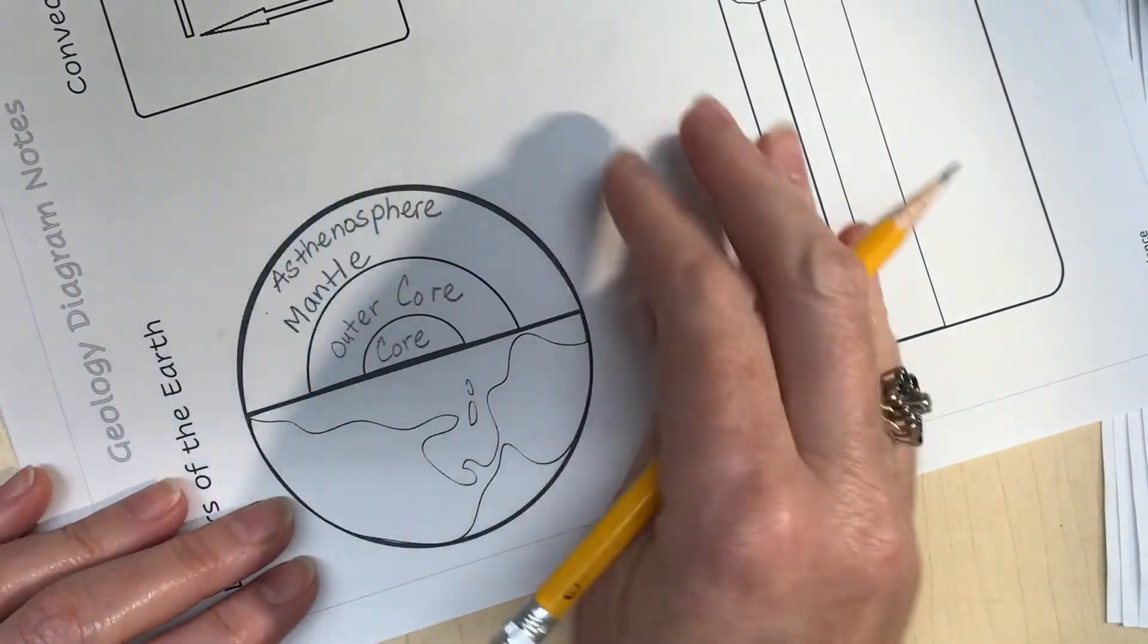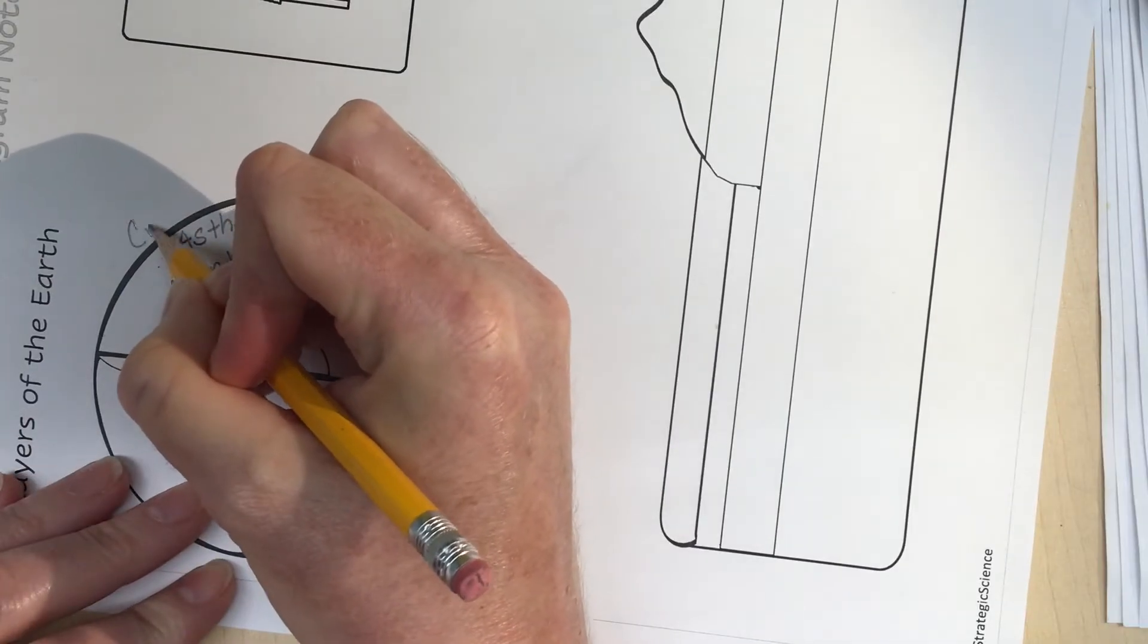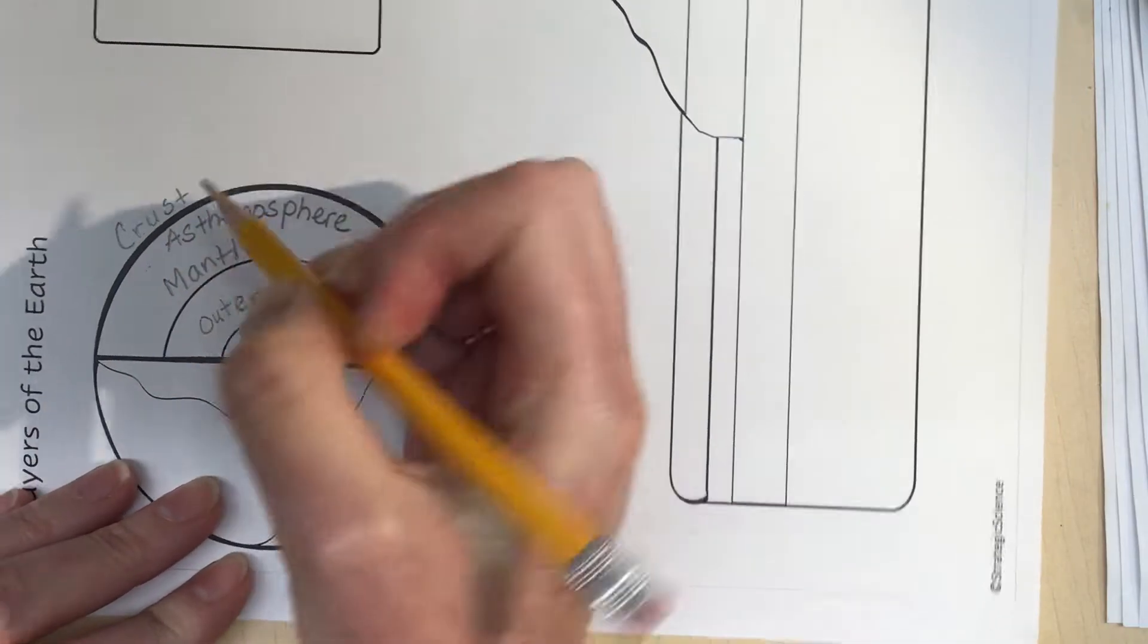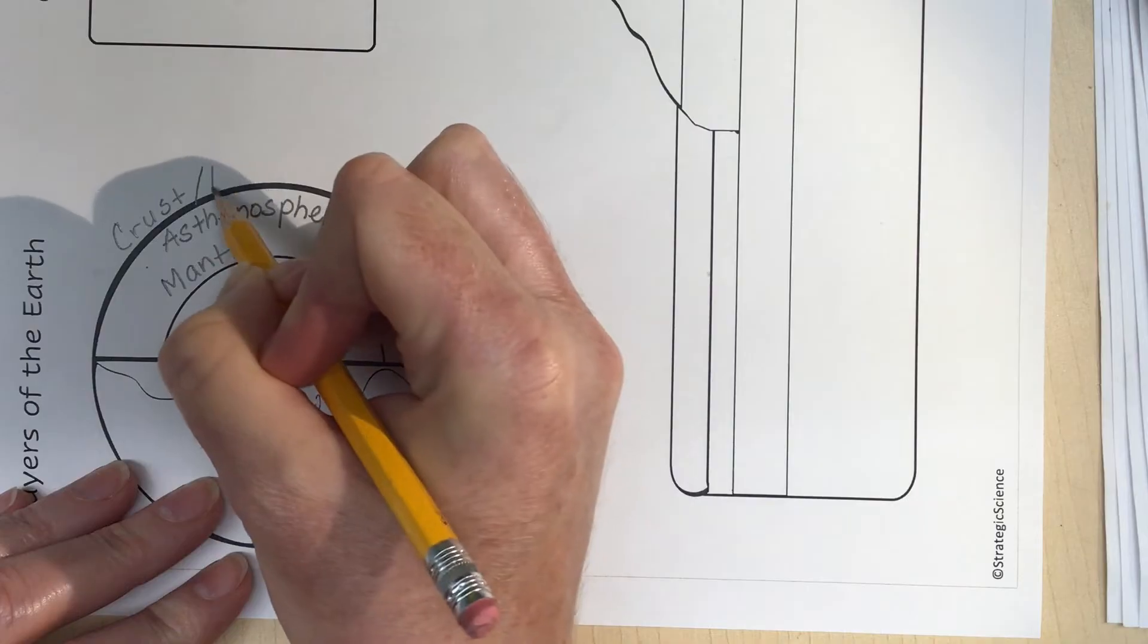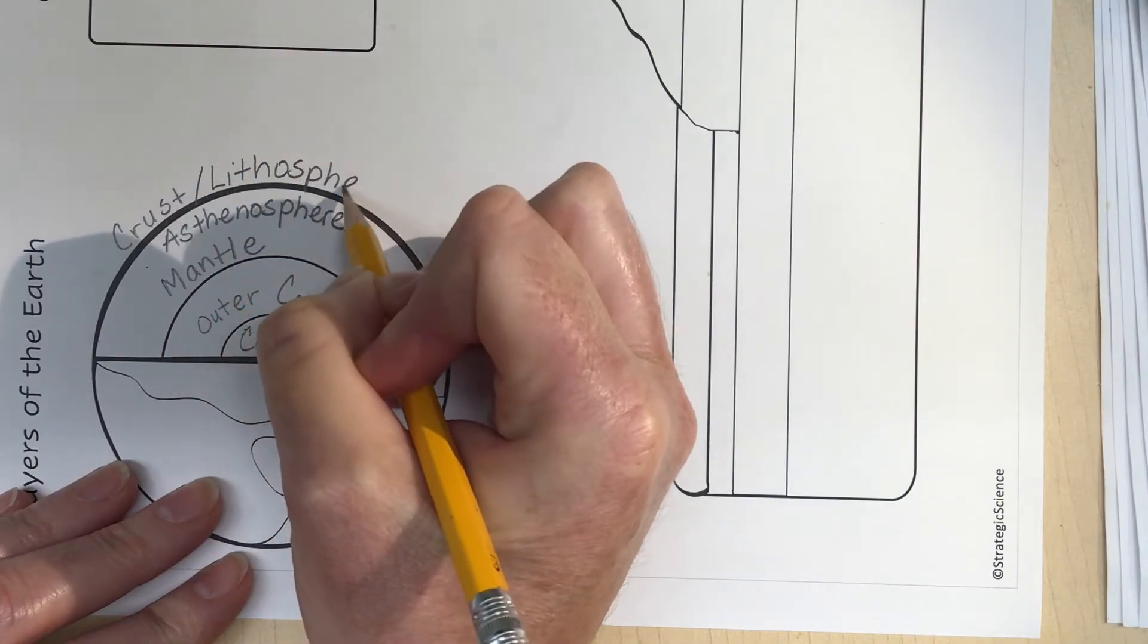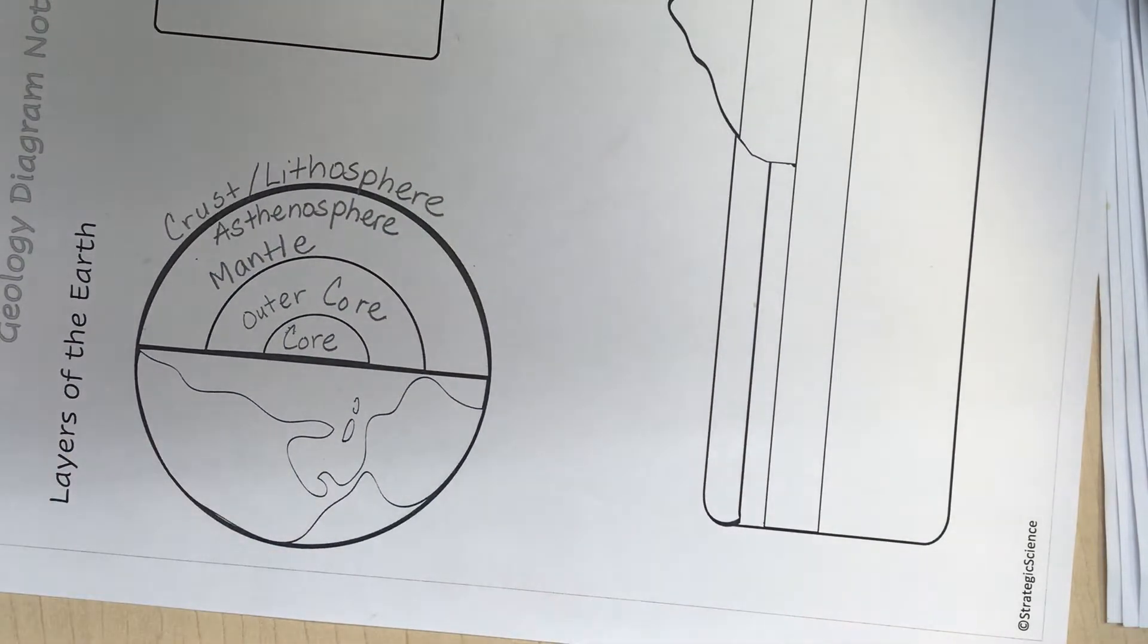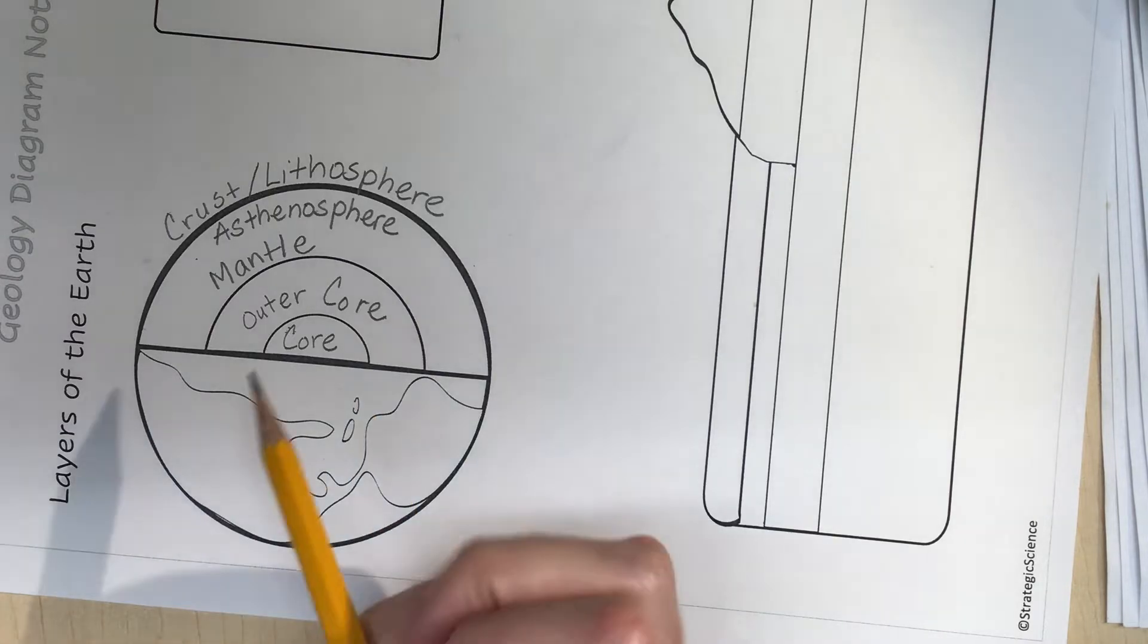First, let's label our top part here. Where we are is the crust of the Earth, and part of the crust is the lithosphere. In our class we're not that concerned about the difference between the crust and the lithosphere - we sort of use them interchangeably. That's not completely accurate, but you don't have to know the minor differences.